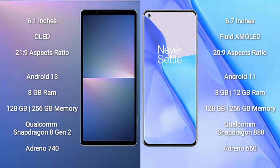Sony Xperia 5 Mark 5 runs on Android 13. OnePlus 9 runs on Android 11. Sony Xperia 5 Mark 5 comes with 8GB RAM, 128GB to 256GB internal storage, Qualcomm Snapdragon 8 Gen 2 processor, and Adreno 740 GPU. OnePlus 9 comes with 8GB or 12GB RAM, 128GB to 256GB internal storage, Qualcomm Snapdragon 888 processor, and Adreno 660 GPU.